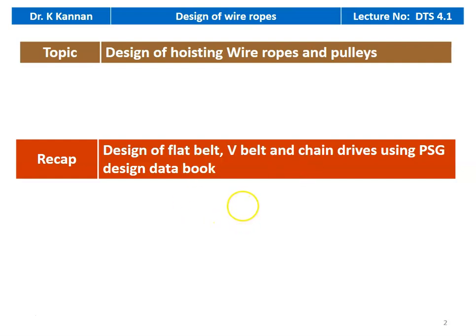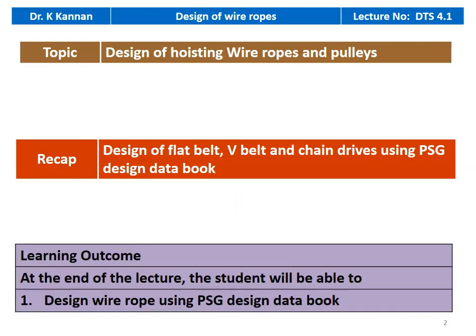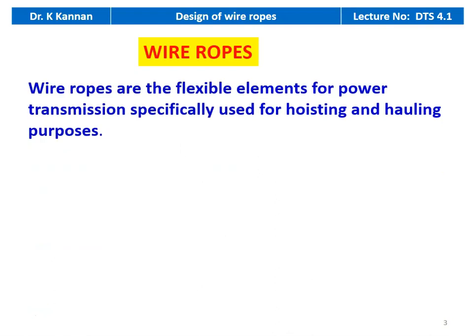In the earlier lecture, we discussed the design of flat belt, V-belt, and chain drive using the PSG design data book. In this lecture, we will be discussing the design of hoisting wire rope and pulleys. The learning outcome: at the end of the lecture, the student will be able to design wire rope using the PSG design data book. Wire ropes are popularly used for hoisting purposes and are flexible elements for power transmission, specifically used for hoisting and hauling processes.